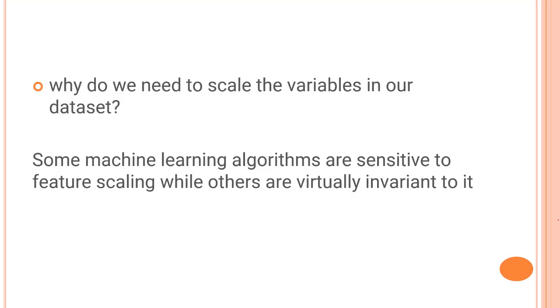Let's take one quick example of it. If an algorithm is not using feature scaling method, it can consider the value 3000 meters to be greater than 5 kilometers, but that's actually not true. And in that case, the algorithm will give wrong predictions. So we use feature scaling to bring all the values to the same magnitude and thus tackle this issue.